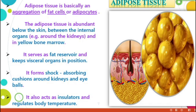Adipose tissue serves as a fat reservoir and keeps visceral organs in position. It forms shock-absorbing cushions around kidneys and eyeballs. If injury or accident happens, this fat substance helps protect the soft organs of the body. It also acts as an insulator and regulates body temperature.